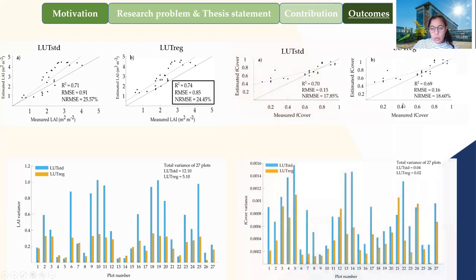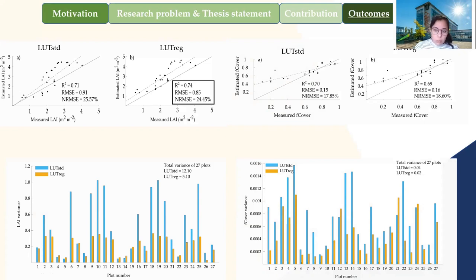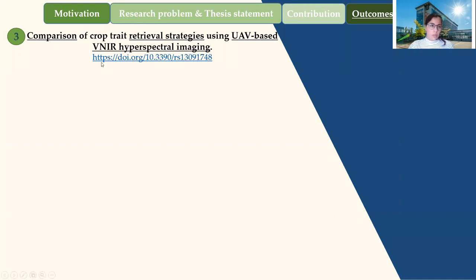For fraction vegetation cover, we could not see any improvement in accuracy. Nevertheless, the bar plot for estimated variance still shows the regularized lookup table giving lower variance or lower error than the standard one, except for some plots. The reason is that fraction vegetation cover does not only rely on the leaf area index and crown cover — it also relies on the leaf inclination distribution function, which we did not measure in the field at that time. We used a fixed value in the modeling, which may have contributed some uncertainty in the estimations.